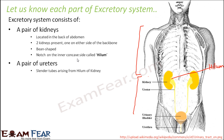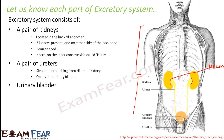The ureters are slender tubes arising from the hilum of each kidney. From the hilum, two tube-like structures run down until the urinary bladder — these are the ureters, and they open into the urinary bladder. Urine formation takes place in the kidneys; once formed, urine passes through the ureters and reaches the urinary bladder. The urinary bladder is a pear-shaped, big sac-like structure used for storing urine — it is the reservoir of urine and is muscular in nature.